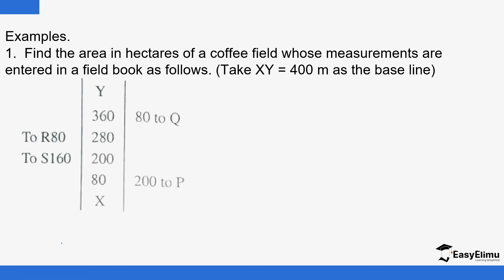The baseline from the previous lesson starts from X to Y. I'll just draw the baseline. This is a sketch. This is X, and from X to the first offset is 80 meters. The length from the baseline to the boundary along the offset is 200 meters.